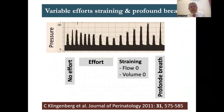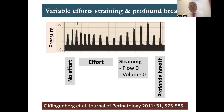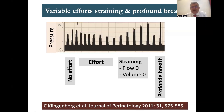Another variable effort pattern: a patient initially doing no effort, then helping the machine causing PIP to drop progressively, then straining — pushing against inspiration so that flow and volume register as zero. The machine then shoots PIP up and up during straining. When the patient finally takes a deep breath with the already-high PIP, the resulting volume is very high. Straining followed by a profound breath can cause extreme PIP variation and should be recognized and addressed.